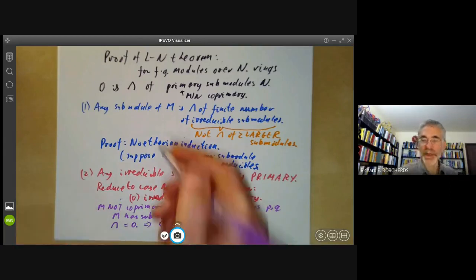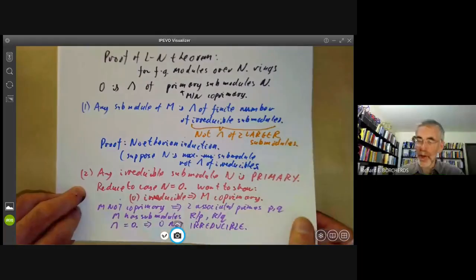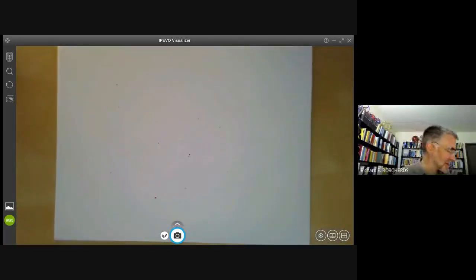So this implies naught is not irreducible. There's the proof, skipping one or two details, but it's an enormous improvement on the hundred pages that Lasker originally took.